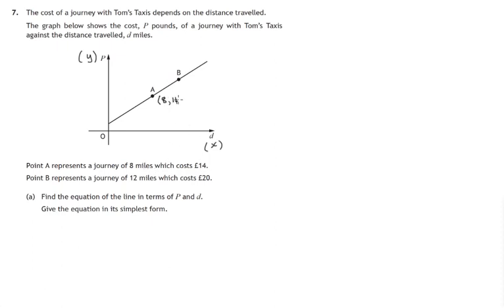So 8, 14 for the coordinates of this point and point B represents a journey of 12 miles. So the d-coordinate is 12 and the p-cost coordinate is 20. So there's the two points with their coordinates. We're asked to find the equation of this line in terms of p and d.